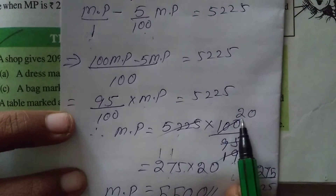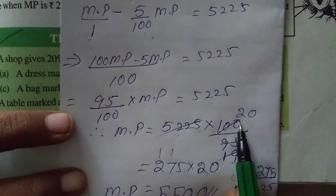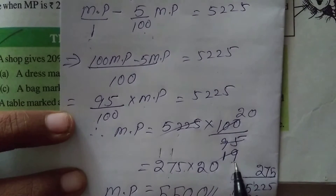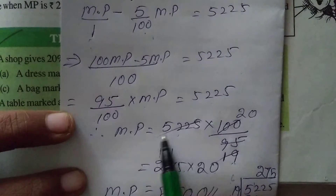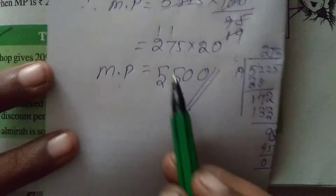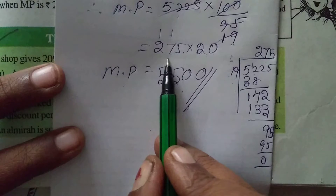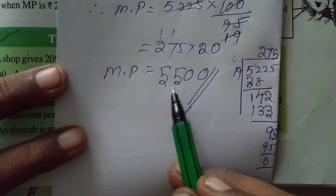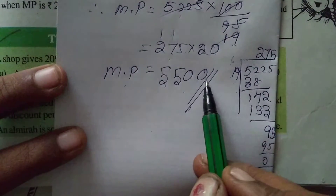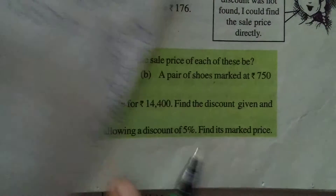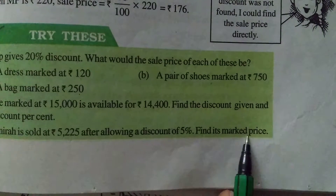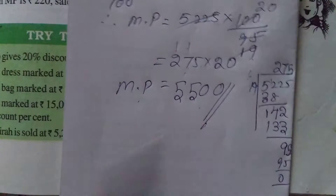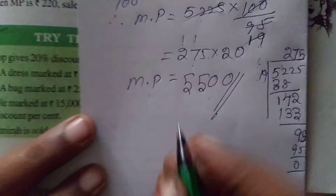Marked price equals 5,225 multiplied by 100/95, the reciprocal. We cancel using the 5 table first: 100 divided by 5 gives 20, and 95 divided by 5 gives 19. Then 19 goes into 5,225 directly 275 times. So 275 multiplied by 20 is 5,500. The marked price is rupees 5,500.